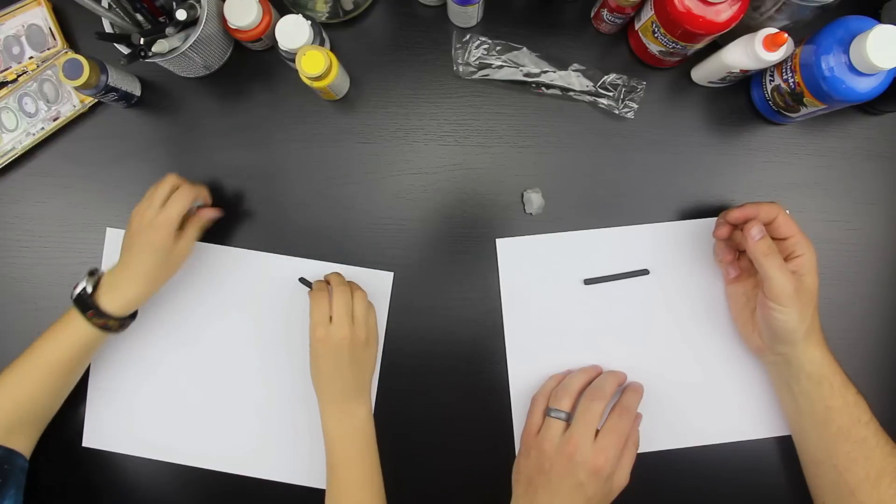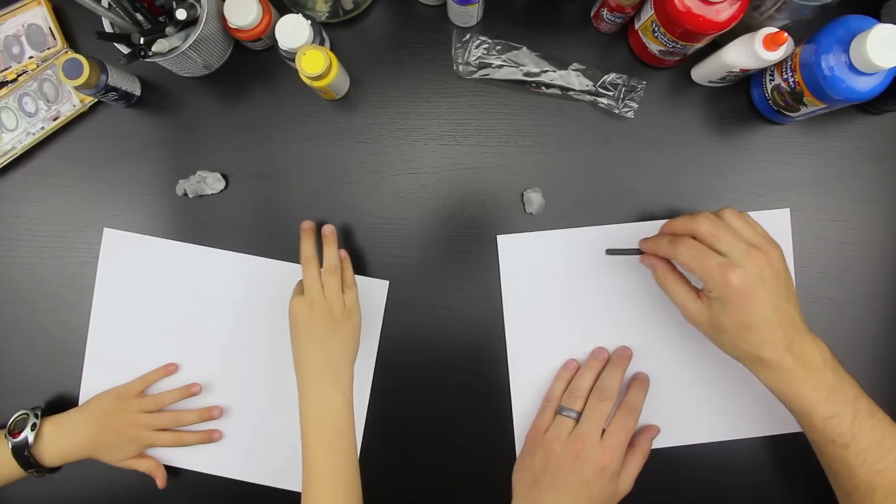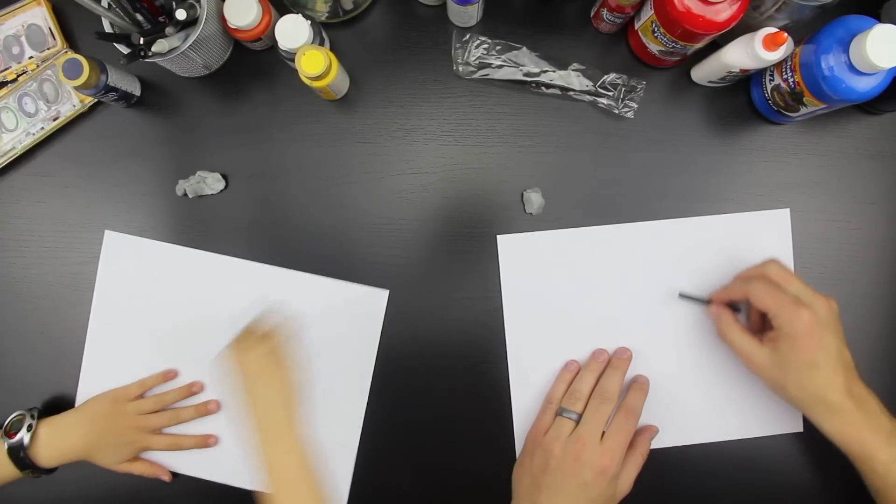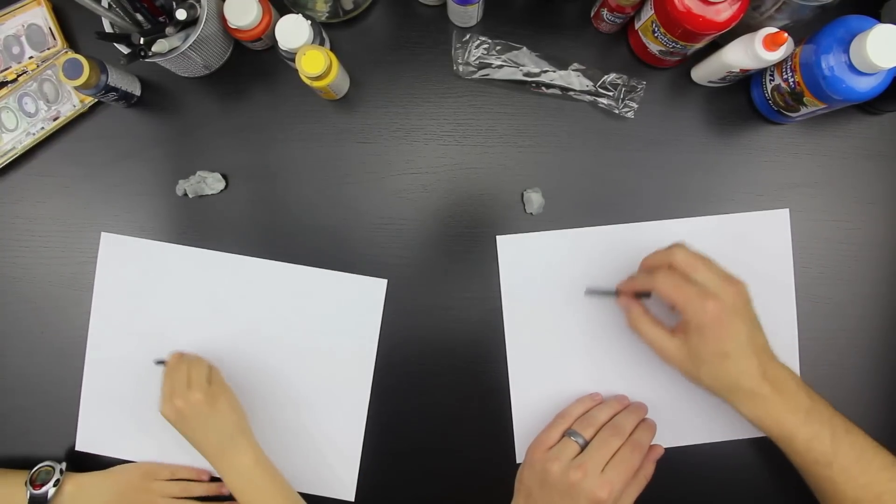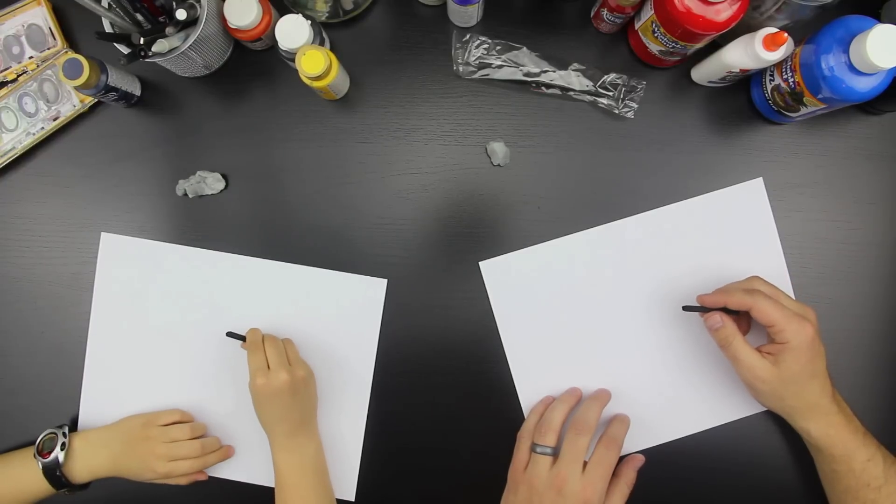How do we hold the charcoal? Like a pencil? Nope. You pick it up like that. You hold it so that it's on its edge so it's easier to draw with. You ready to draw a cube? Yes.